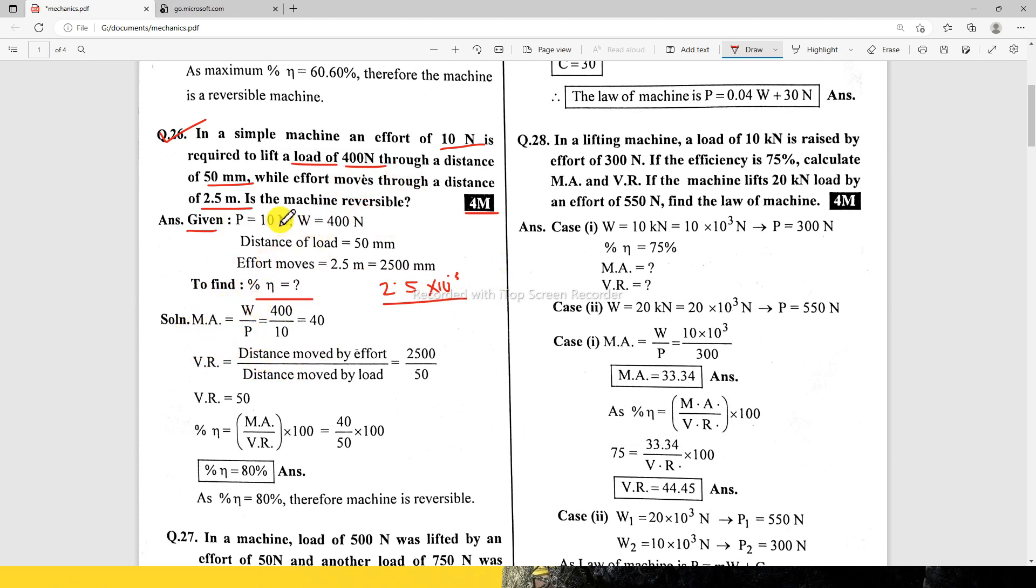This formula is MA equals W by P. W value is 400 and P value is 10, so MA equals 40. VR equals distance upon distance, so VR value is 50. Now percent efficiency equals MA upon VR multiplied by 100, so efficiency equals 80%. Therefore machine is reversible. So easy.